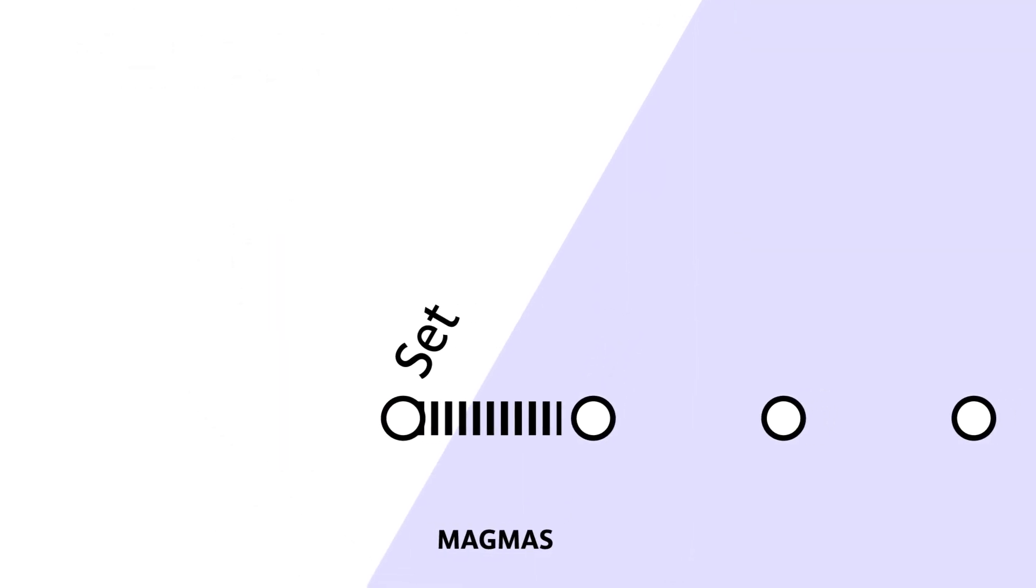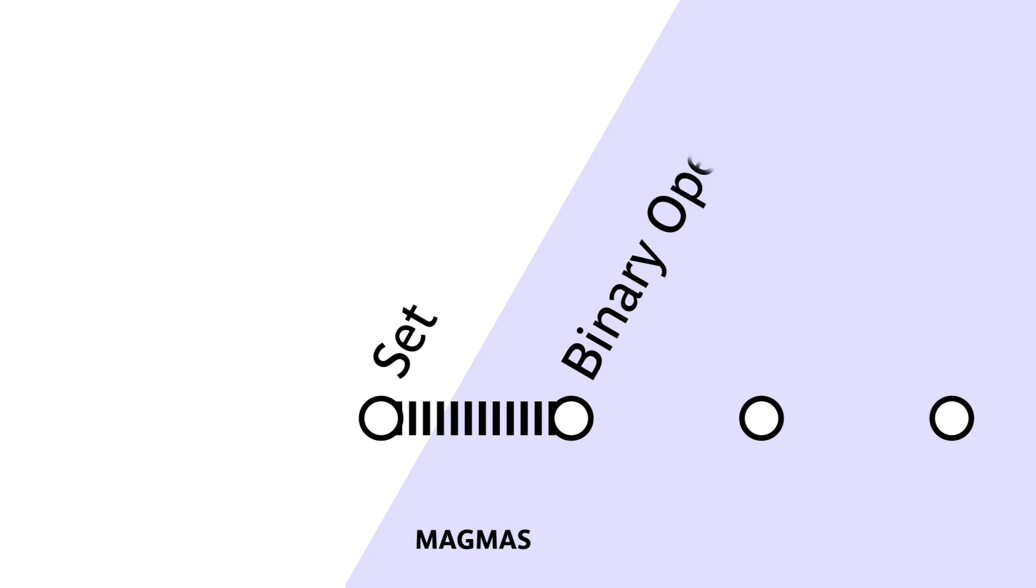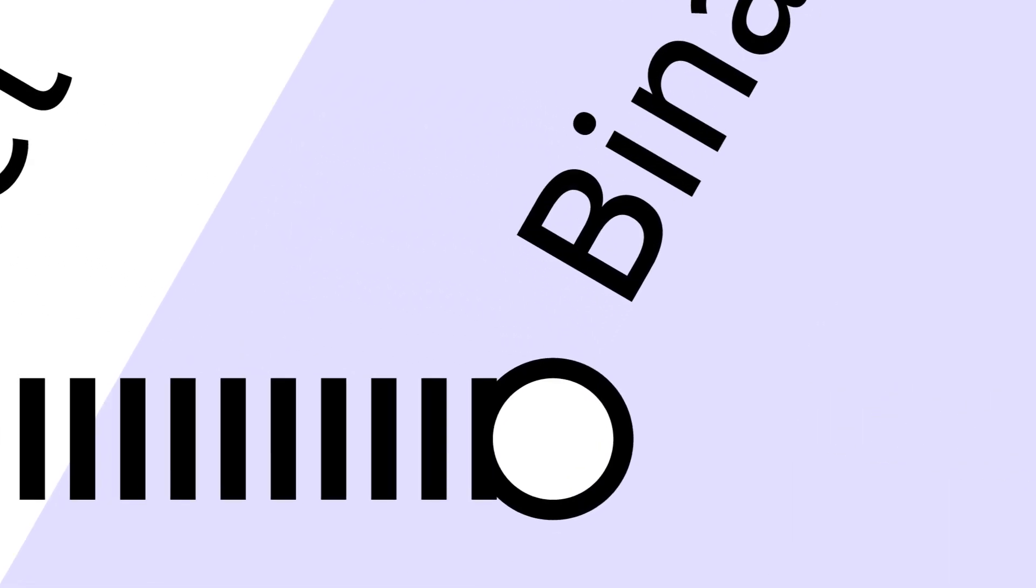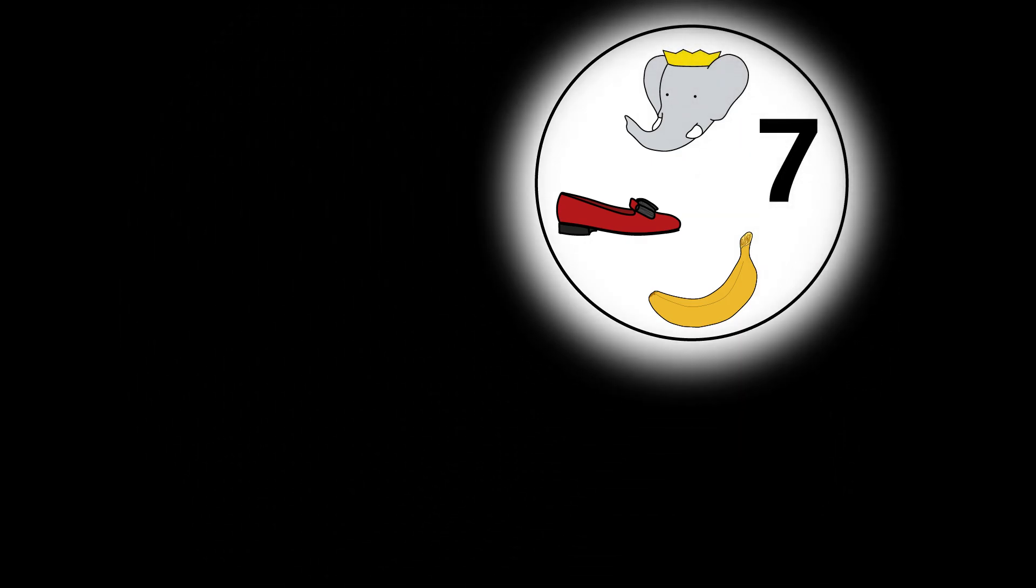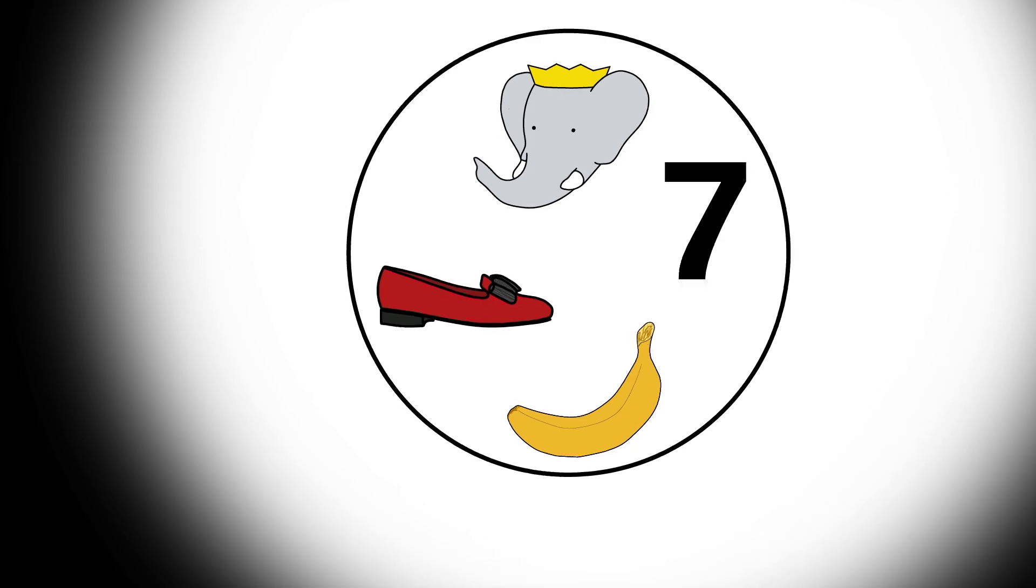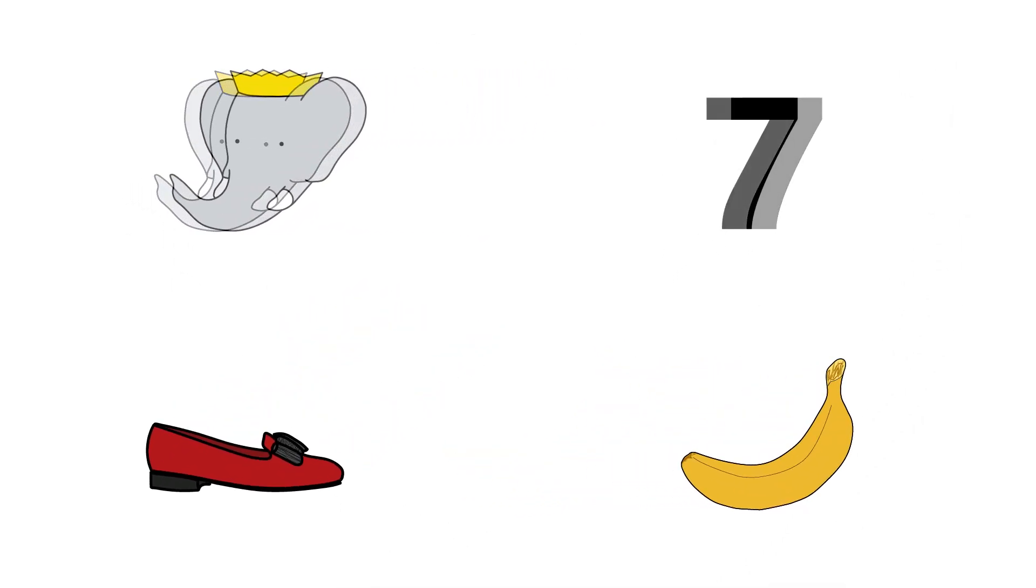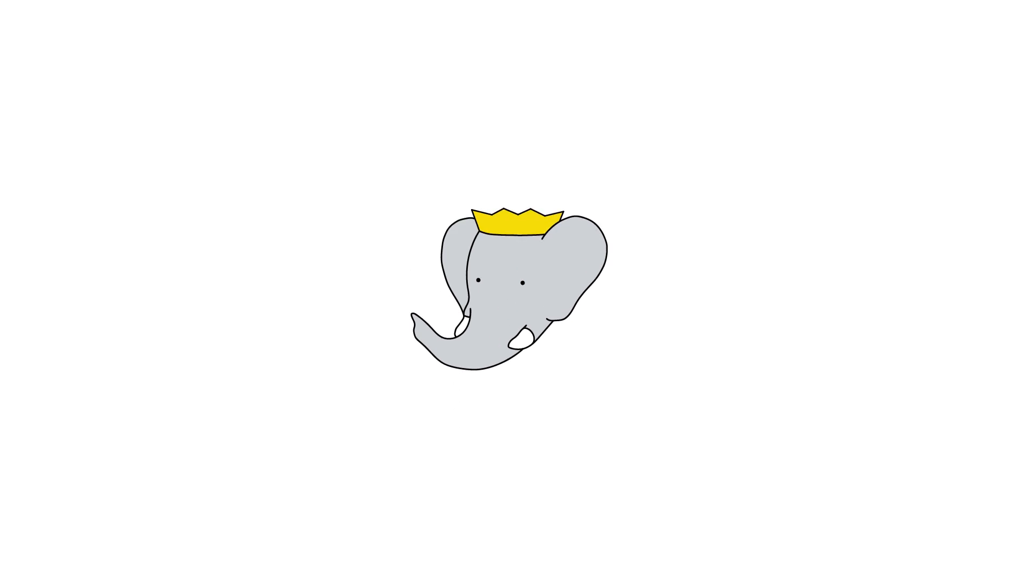Let's change that by leaving the set territory for our first stop called binary operation. The sets you see here don't look that much different as far as their elements go. However, something is happening inside of them. Every two elements can now interact with each other, combining into another one. You've now entered the territory of magmas.